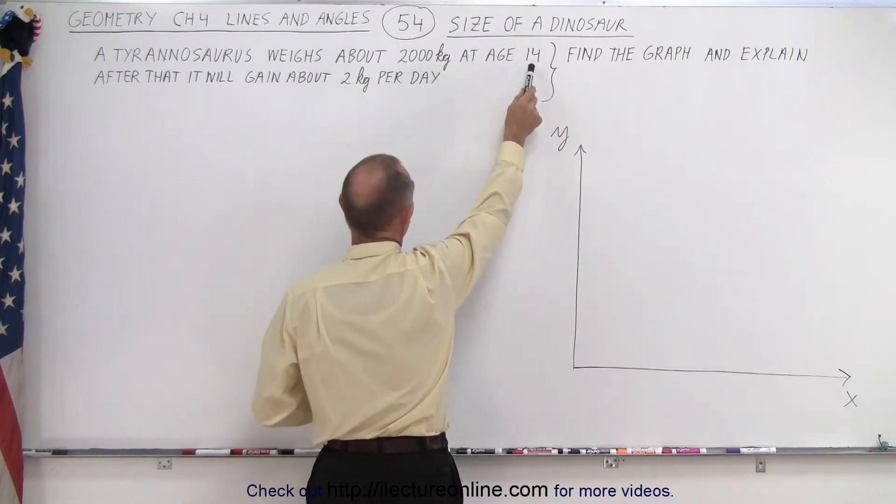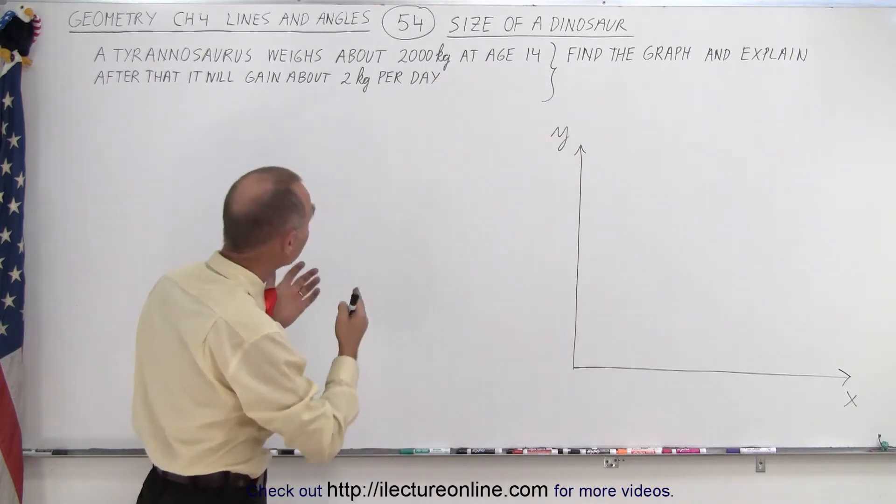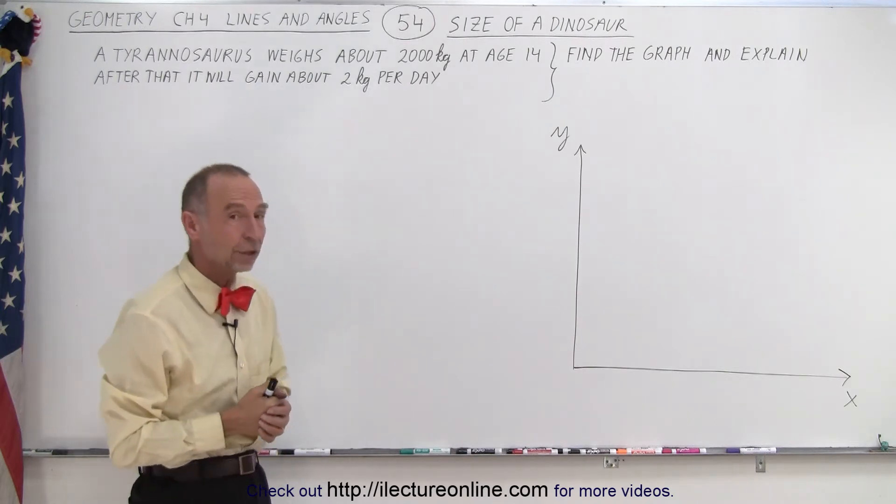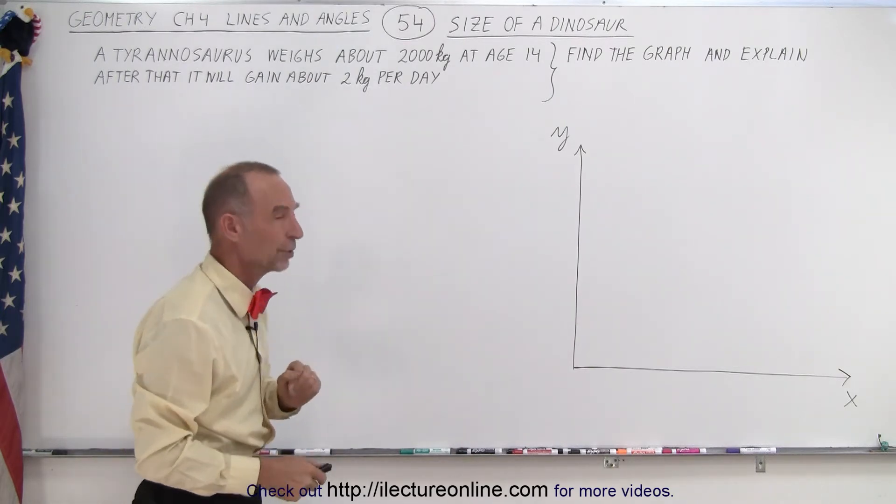So the Tyrannosaurus Rex, when the age is 14 years old, he will weigh about 2,000 kilograms. And after that, they will gain about 2 kilograms per day.